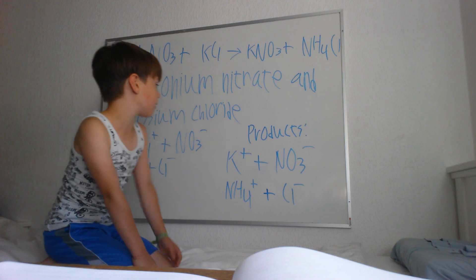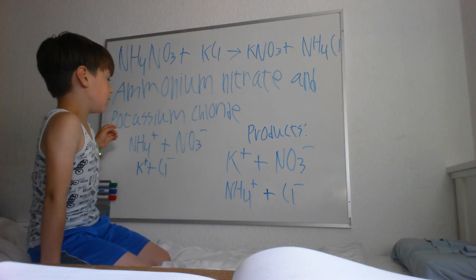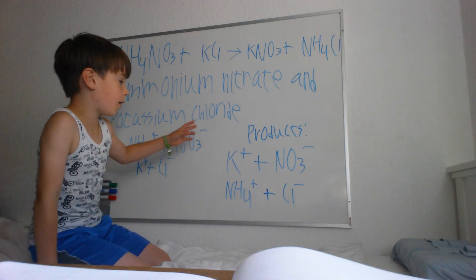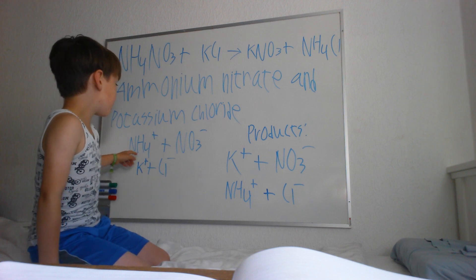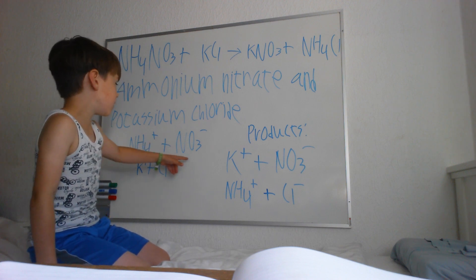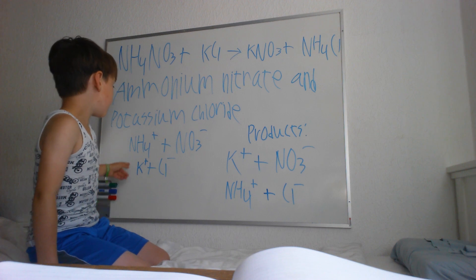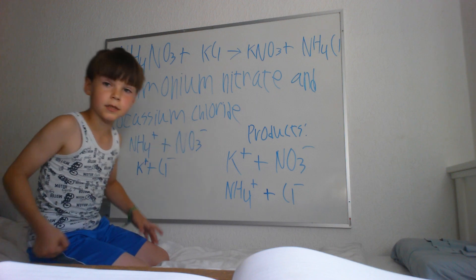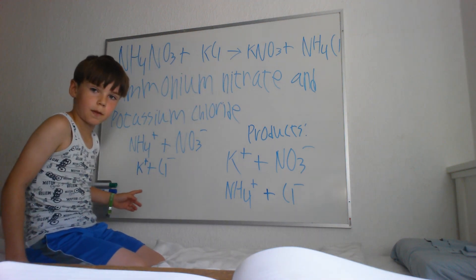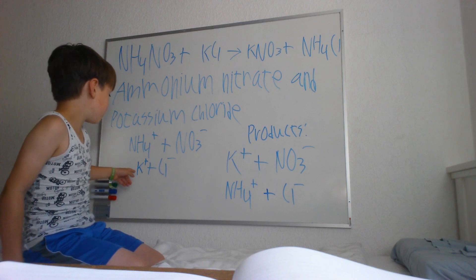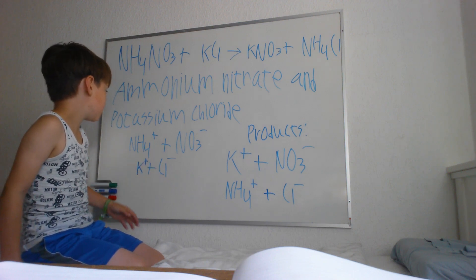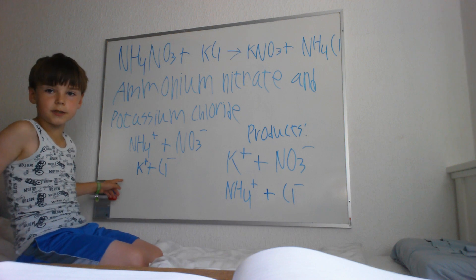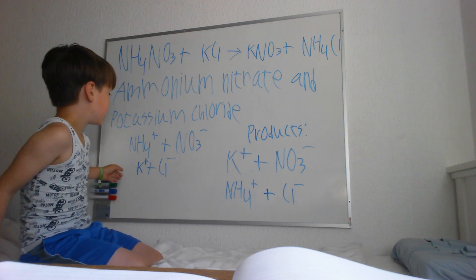Now, here we have all the chemicals that we are using to form the product. The ammonium nitrate is NH4+ and NO3-. NH4+ is ammonium and NO3- is nitrate. We have K+ and Cl-, where K+ is potassium.